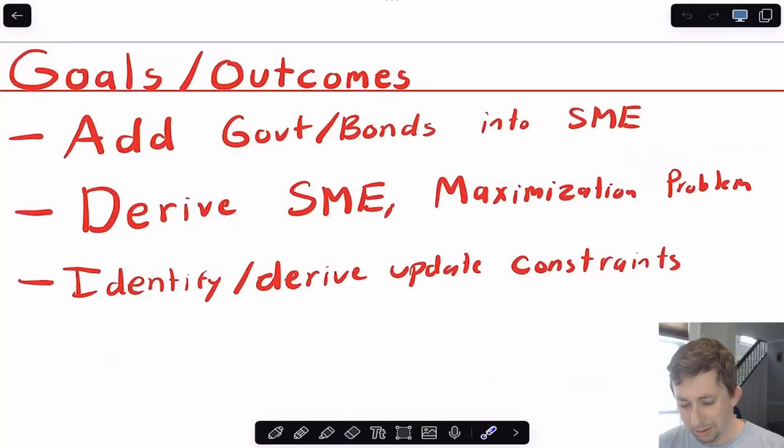Just basic goals and outcomes for this video. We're going to add government and bonds into the sequential market equilibrium. We're going to talk about what the new definition of a sequential market is. We're going to talk about the maximization problem in this new model. And then we're going to update the constraints in the problem.